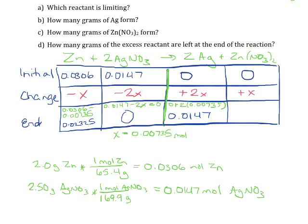We can see that we're checking our work along the way to make sure all of our answers seem reasonable. For the last product, we're just going to have 0 plus x, so we're going to have 0.00735 moles of zinc nitrate at the end of this reaction.